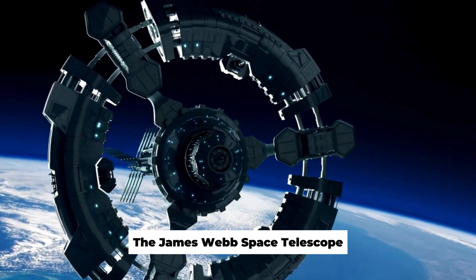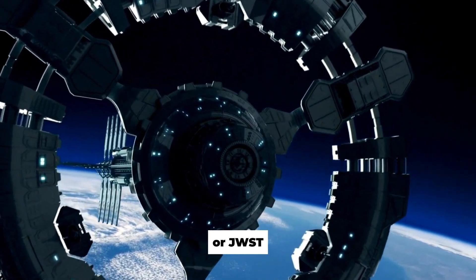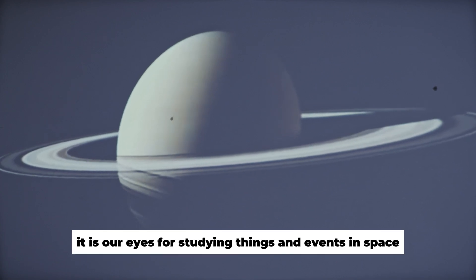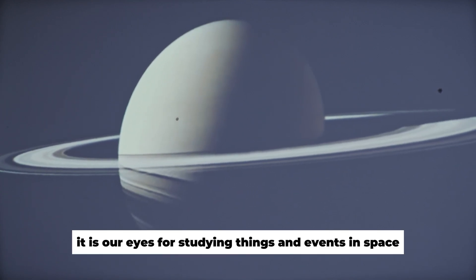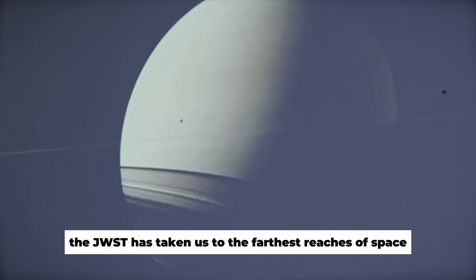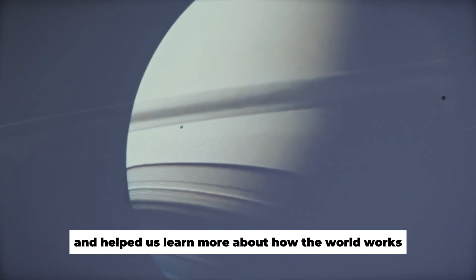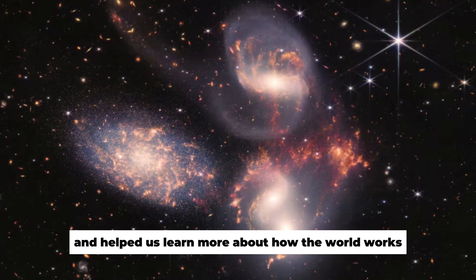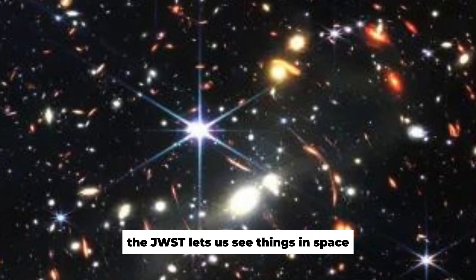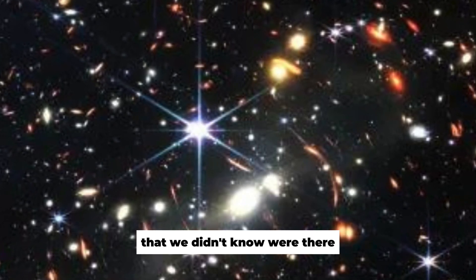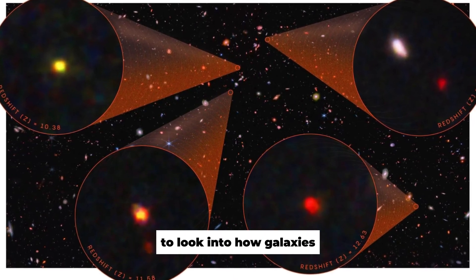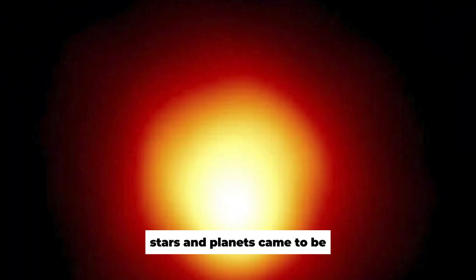The James Webb Space Telescope, or JWST, is the most powerful telescope we have ever made. It is our eyes for studying things and events in space. The JWST has taken us to the farthest reaches of space and helped us learn more about how the world works. With its infrared filters, the JWST lets us see things in space that we didn't know were there. Researchers have used its lens to look into how galaxies, stars, and planets came to be.